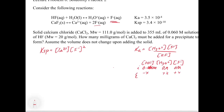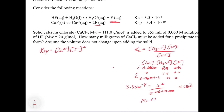Plugging in: 3.5 × 10⁻⁴ = x² / (0.060 − x). The approximation works because 0.060 / (3.5 × 10⁻⁴) > 100, so we drop the minus x. Solving for x gives [F⁻] = 0.00458 molar.